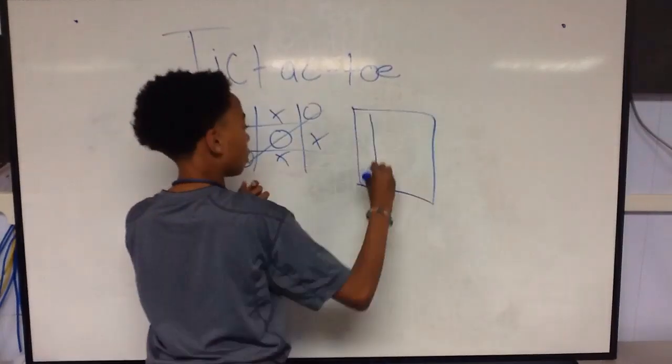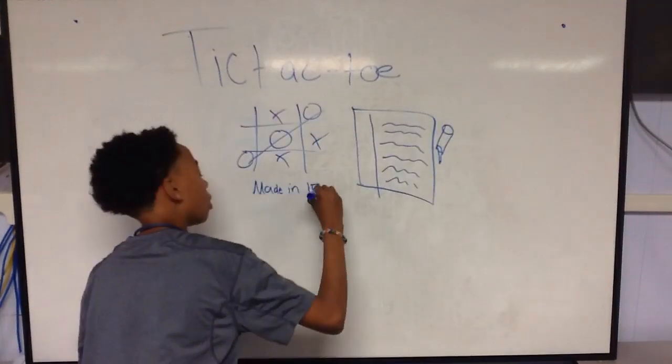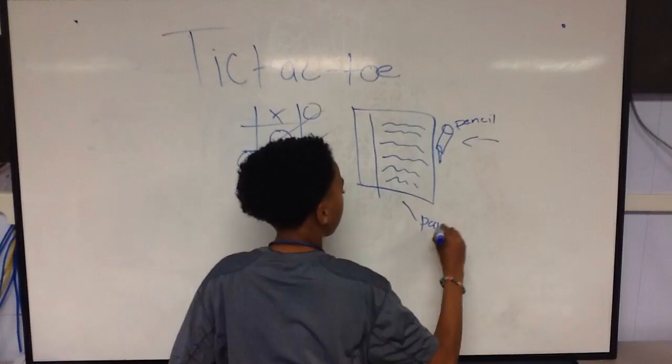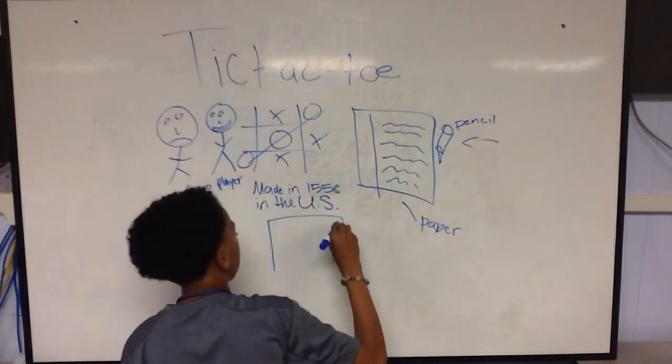Tic-tac-toe was played on paper and used a pen. It was made in the U.S. in 1558. It was a two-player game.